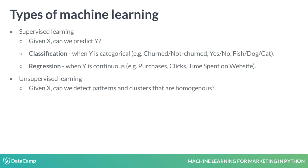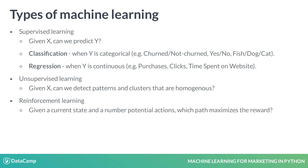Finally, there is reinforcement learning, which is outside of the scope of this course. The models in this space have agents that act on their own to maximize rewards defined by the environment. They are used in robotics and other advanced fields.